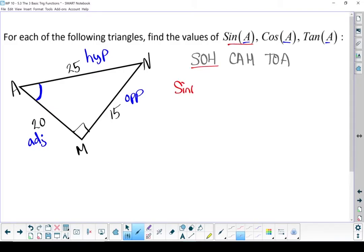Let's start with sine. Sine of theta equals opposite over hypotenuse. So sine of A, because I'm looking from angle A, my opposite is 15, my hypotenuse is 25. Might as well turn that fraction into a decimal. Sine of A equals 0.6.